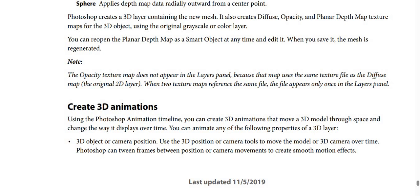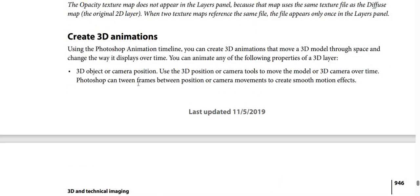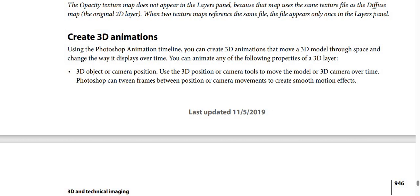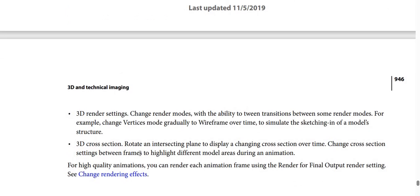How to create 3D animations. Using the Photoshop animation timeline, you can create 3D animations that move a 3D model through space and change the way it displays over time. You can animate any of the following properties of a 3D layer: 3D object or camera position — use the 3D position or camera tools to move the model or 3D camera over time. Photoshop can tween frames between position or camera movements to create smooth motion effects.